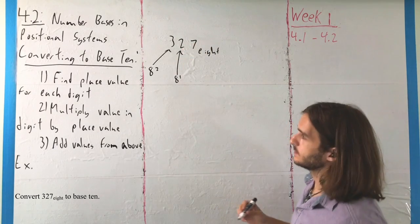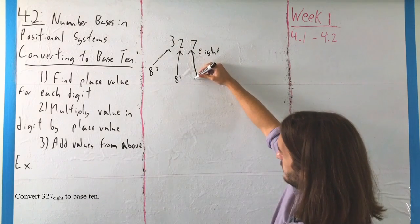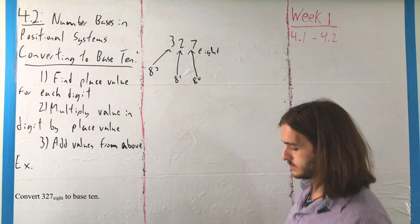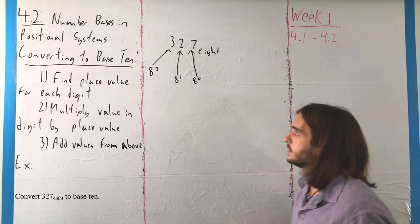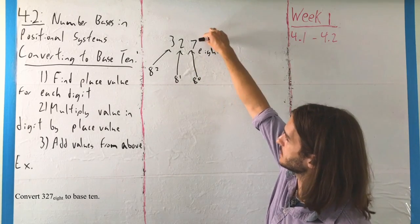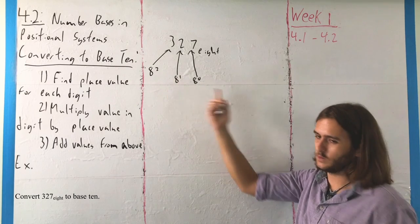That one in the leftmost position will refer to 8 squareds. This one will refer to 8 to the first powers, and that one there will be 8 to the zero, or the single digits. As again, base 8, these are all powers of 8, starting from the right, 0, 1, 2, or if you're confident, 2, 1, 0.